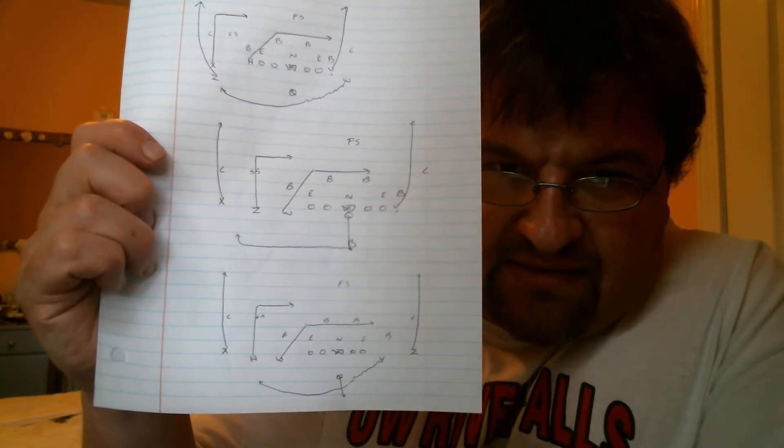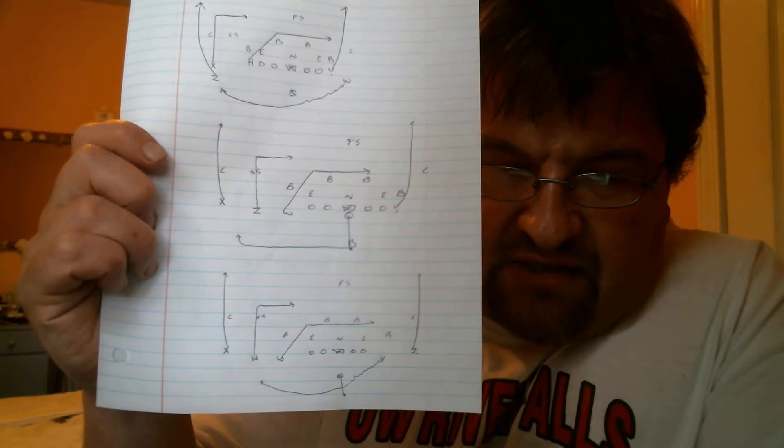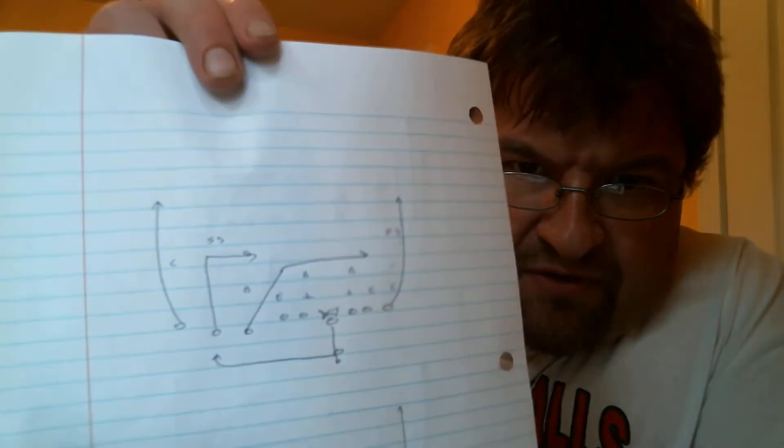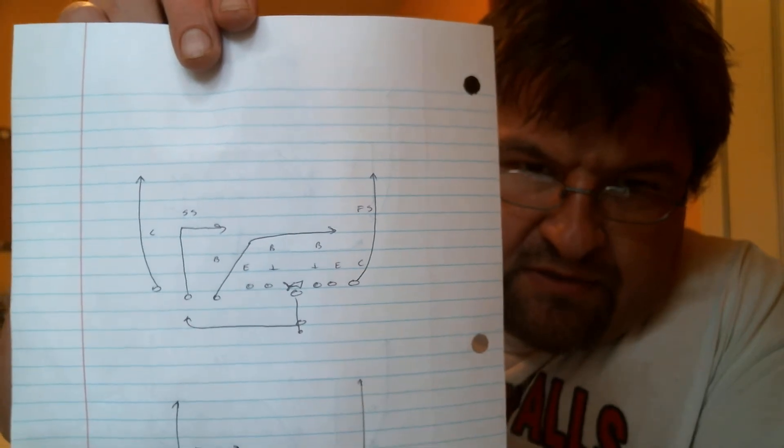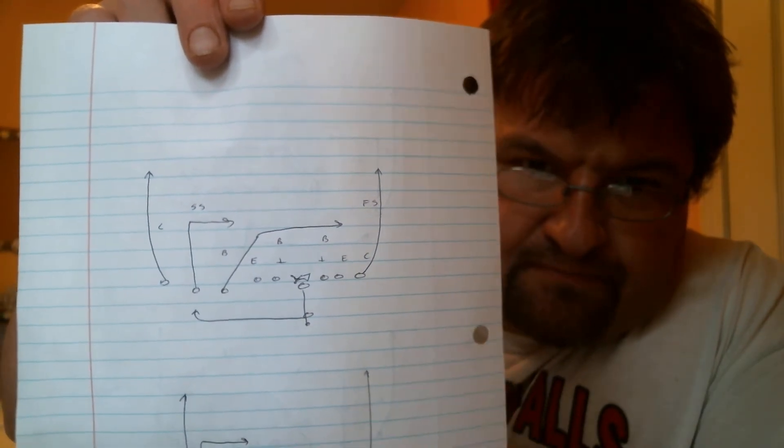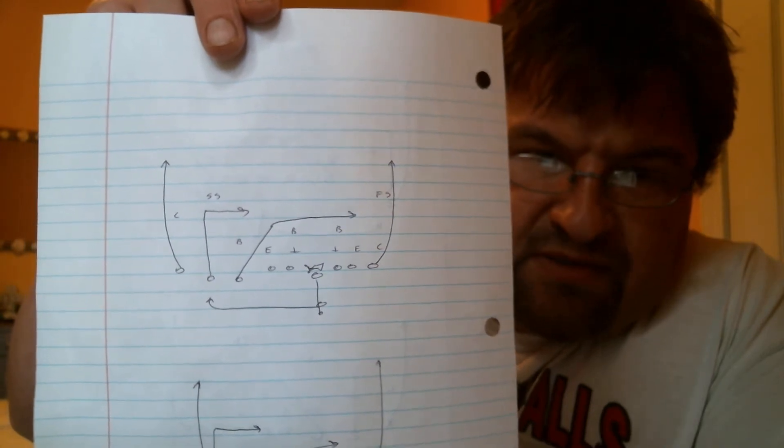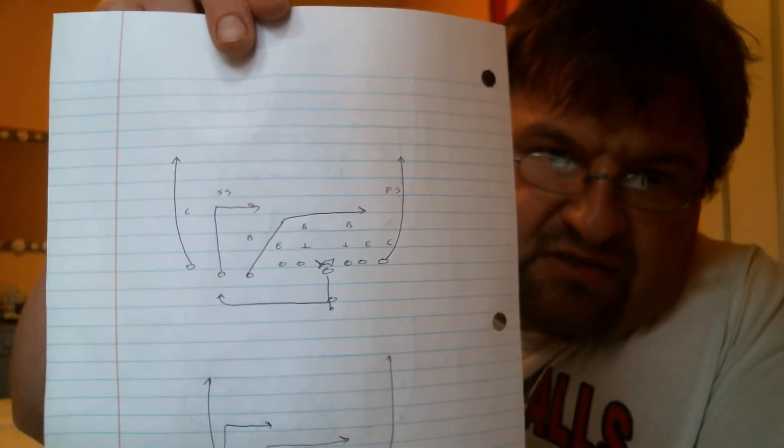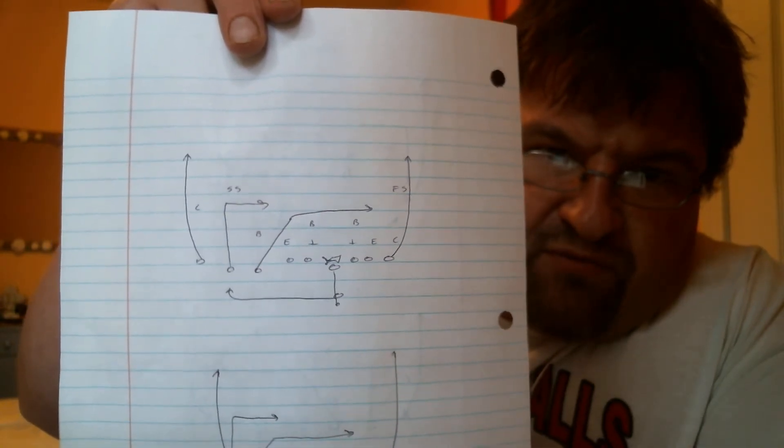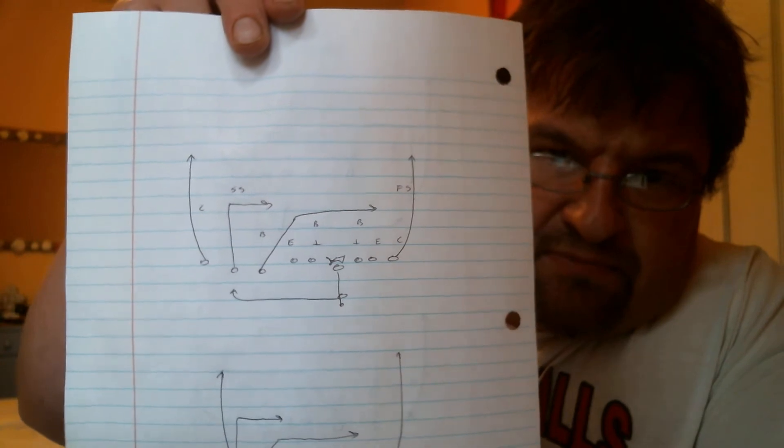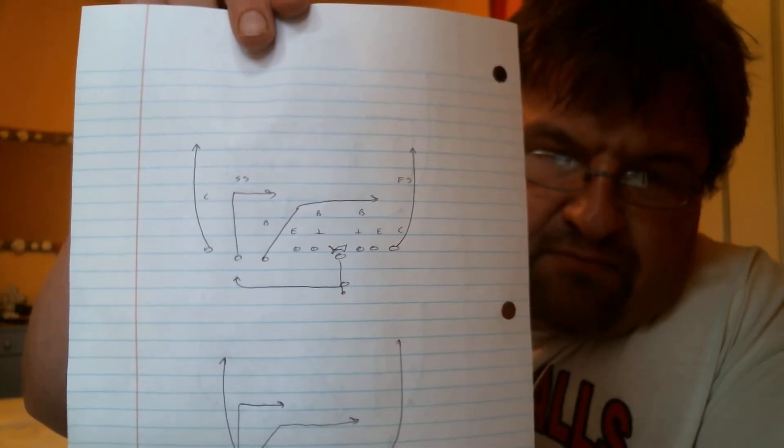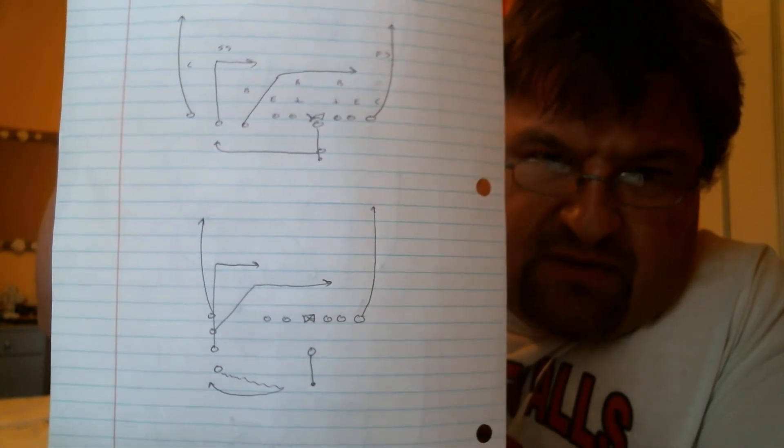Now here's how it would look against a cover two look. As you see here, this is the trips with a tied in look. It can open up a window against cover two because strong safety is deep and it's two alignment. Therefore, you can have an easy attack point trying to hit that dig behind the crossing route.